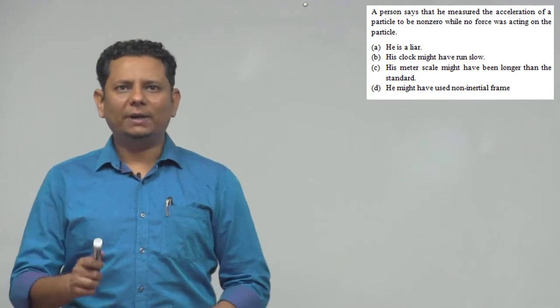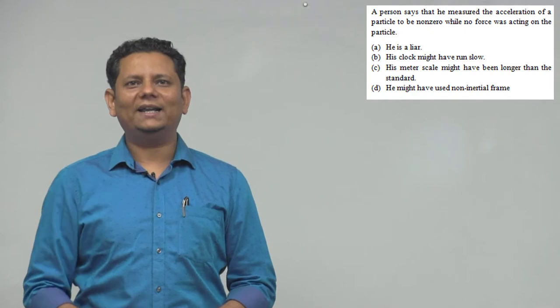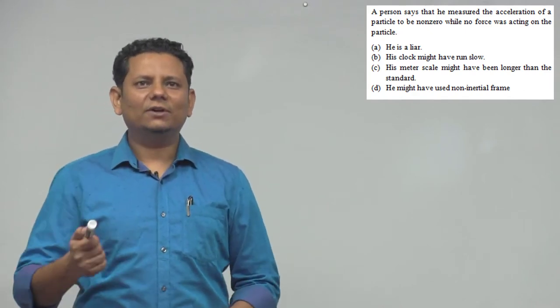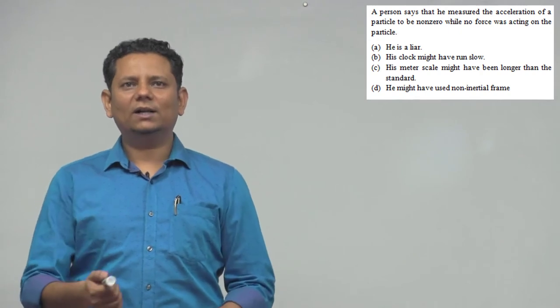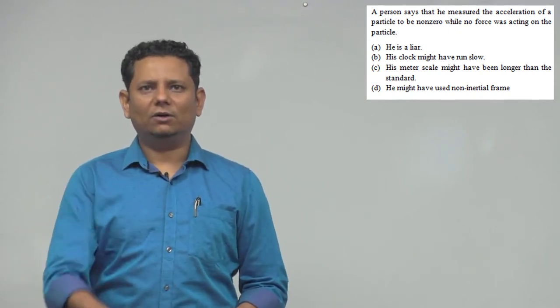There are four options. First, he is a liar. Second, his clock might have run slow. Third, his meter scale might have been longer than the standard. Or fourth, he might have used a non-inertial frame of reference.